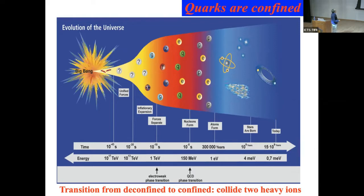Draw your attention to the point at 10 to the power minus 5 seconds where it says 'nucleons form.' If you draw an imaginary line, there are quarks, gluons, and electrons on this side, but there is no quark on the other side. The quarks got confined — caged inside protons and neutrons — and that is confinement.